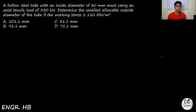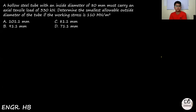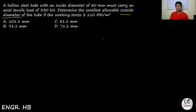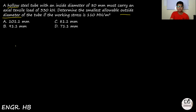First problem: a hollow steel tube with an inside diameter of 80 millimeters must carry an axial tensile load of 330 kilonewtons. Determine the smallest allowable outside diameter of the tube if the working stress is 110 MN per square meter. The question is looking for the smallest allowable outside diameter. Since the tube is hollow, there's an outside and an inside diameter.